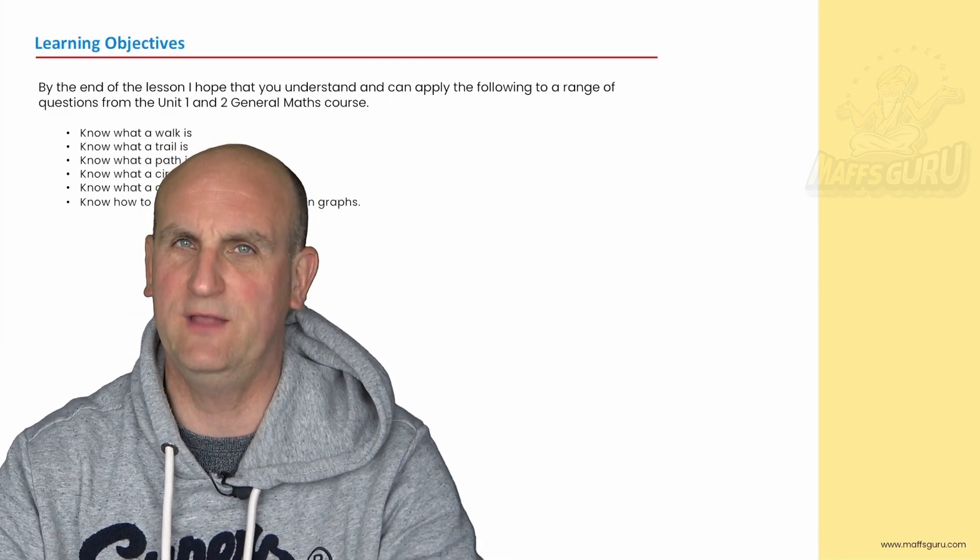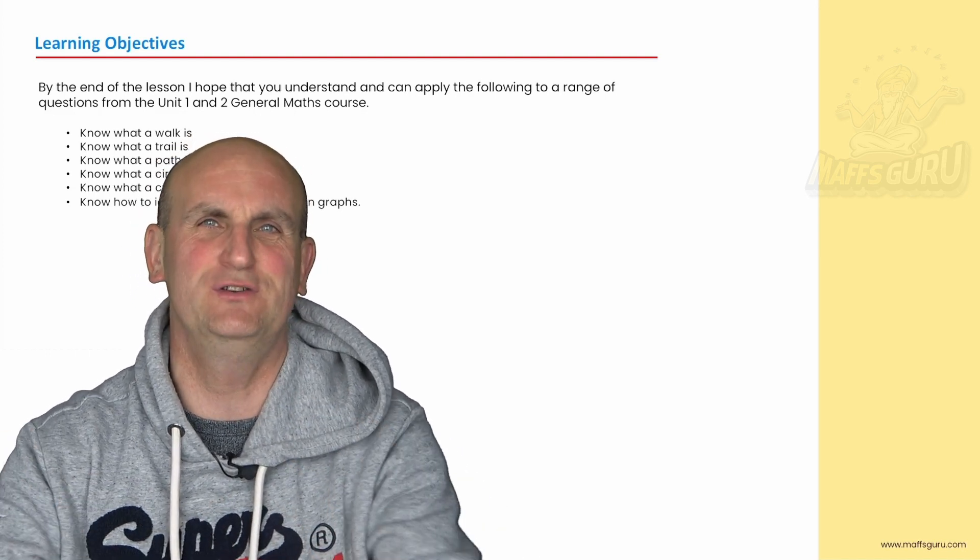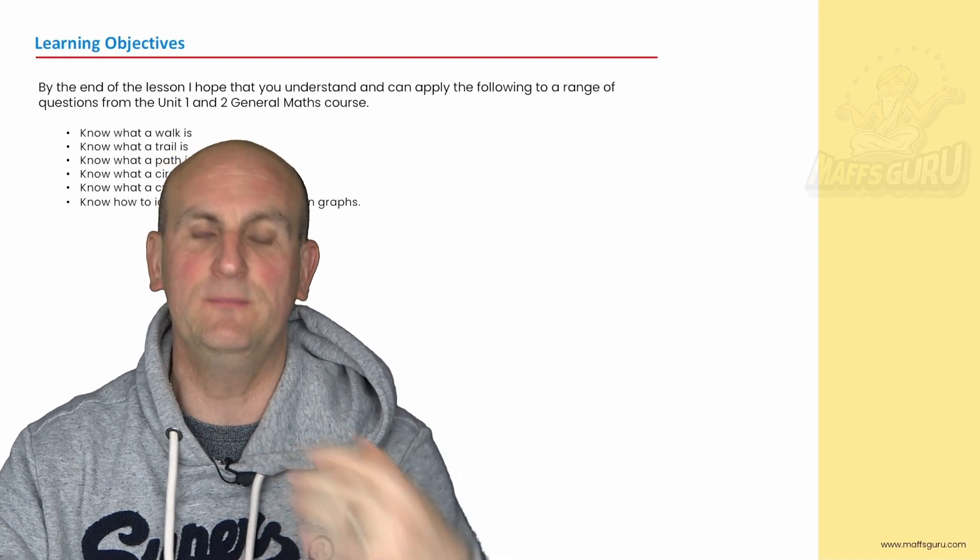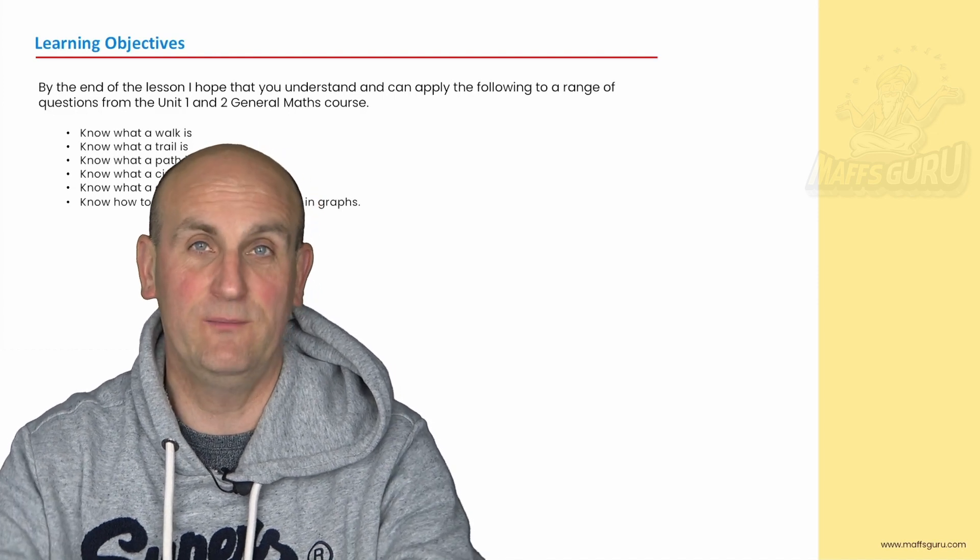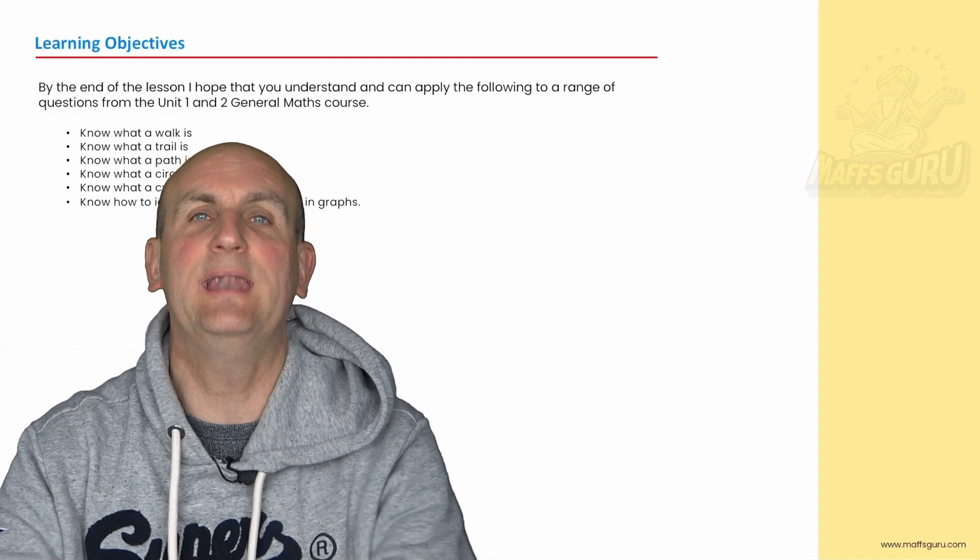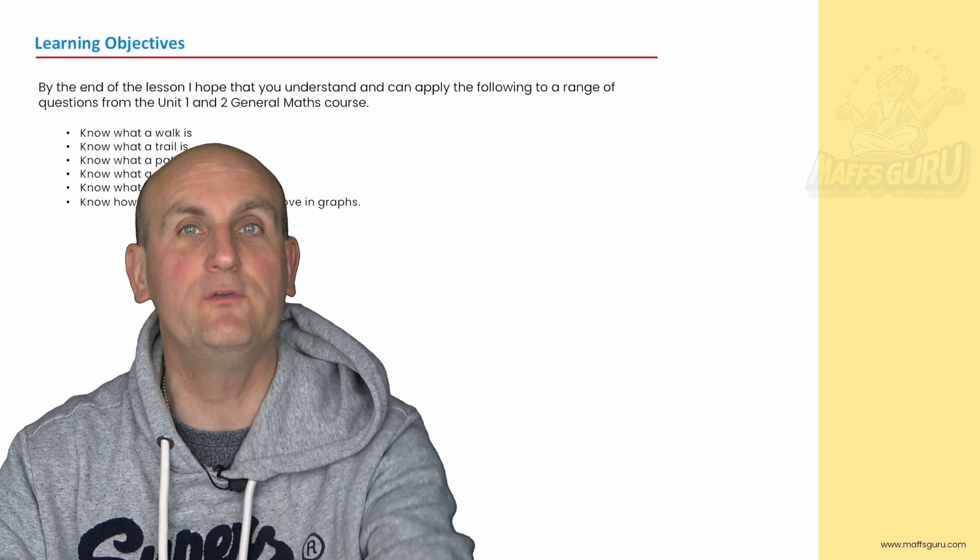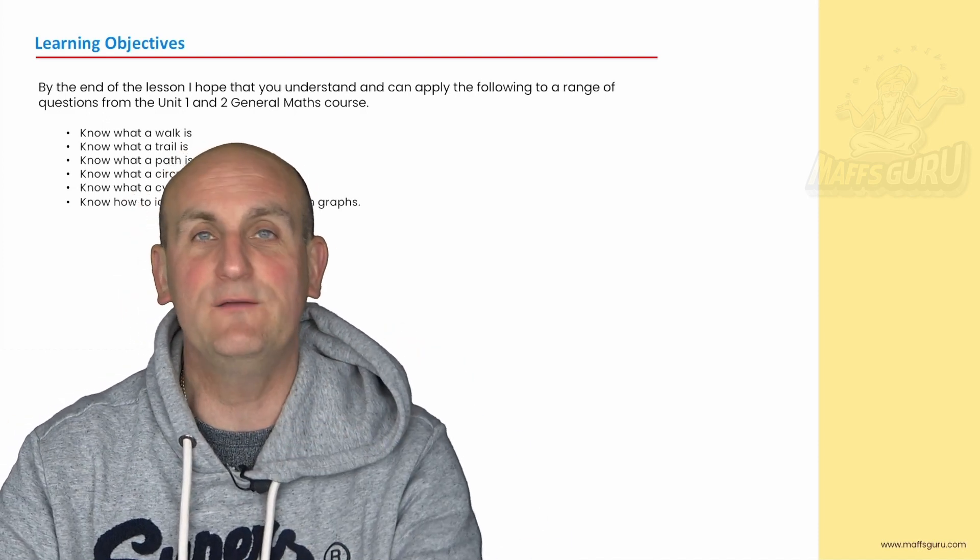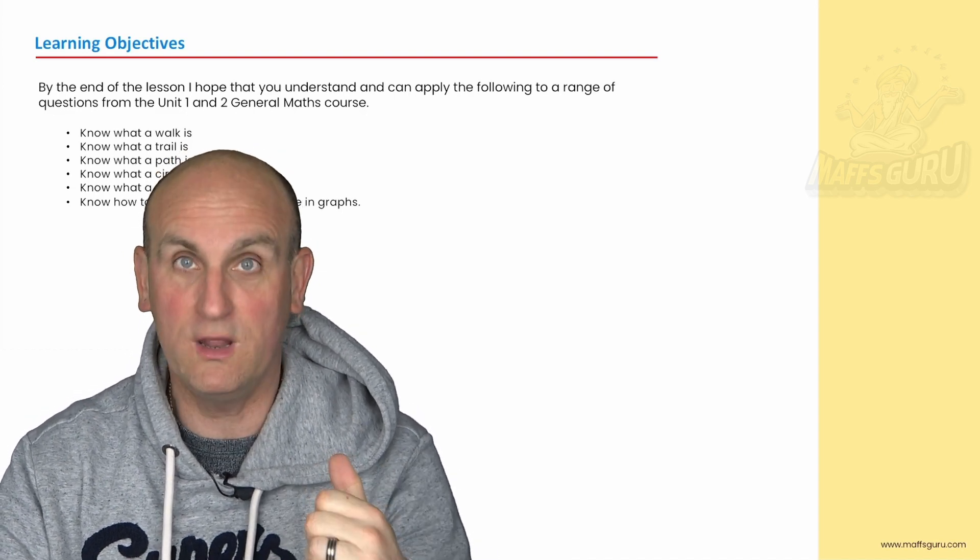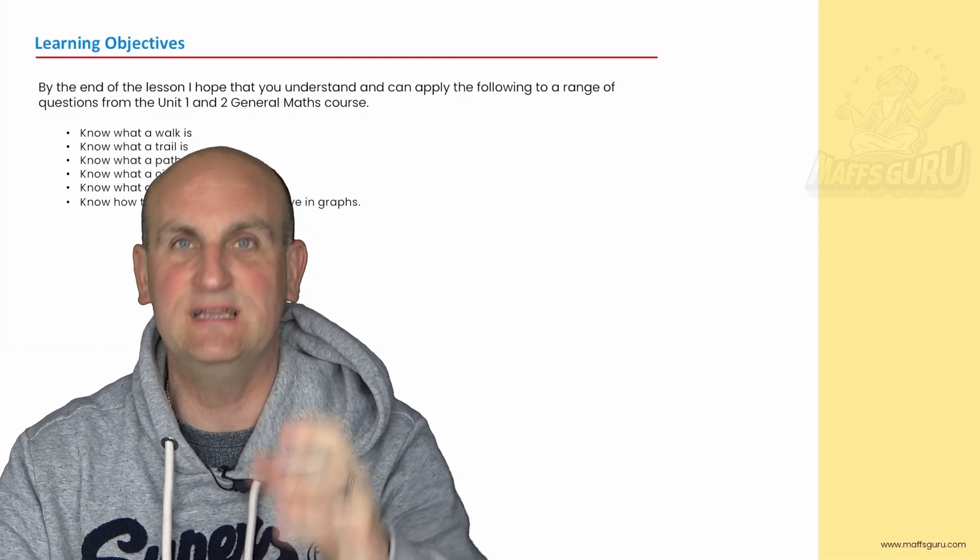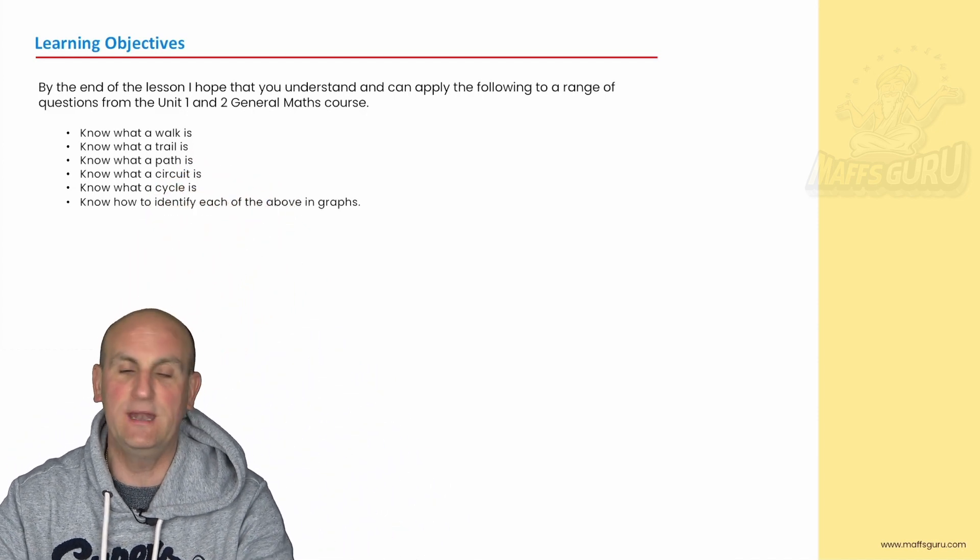But otherwise, hey, watch the video. It's part of the General Maths Units 1 and 2 course, and if you're not doing General Maths Unit 1 and 2 and you're watching around the world, it should still be useful. As you can see behind me, I'm going to be looking at what a walk is, a trail, a path, a cycle and a circuit. These are really important terms not just for this year but next year as well. The notes behind me are all downloadable on MathsGuru.com.